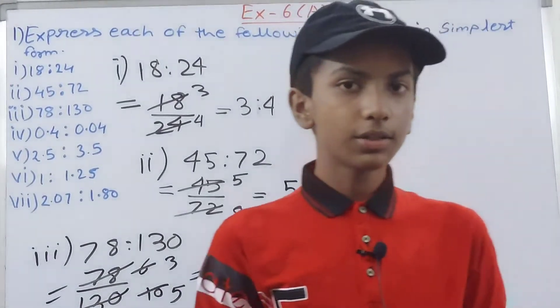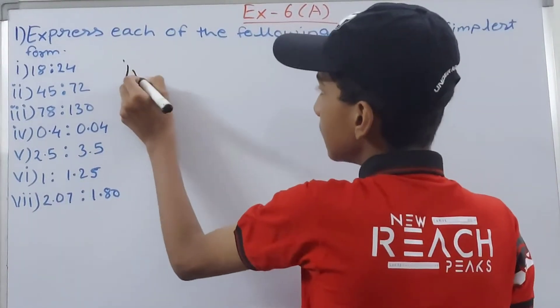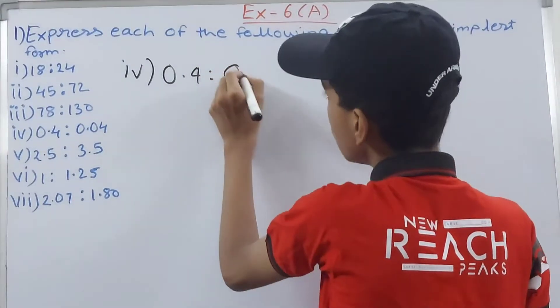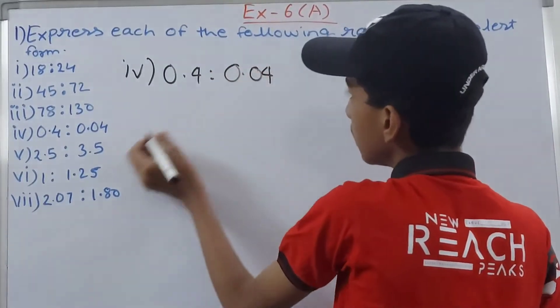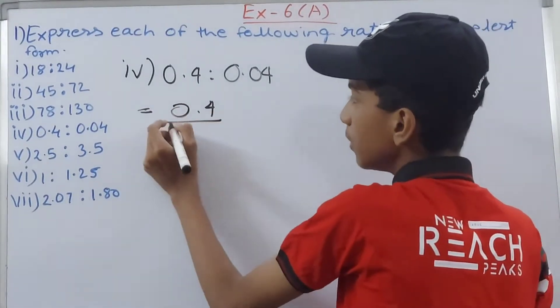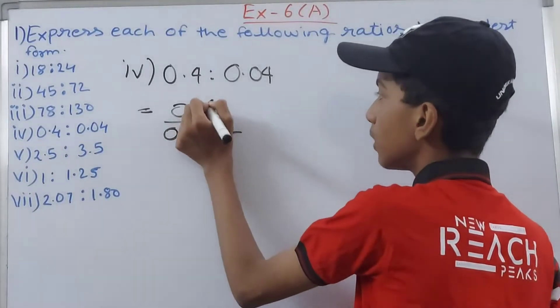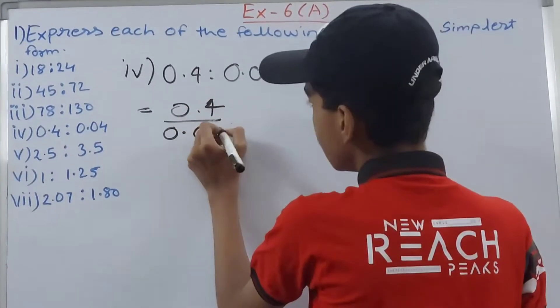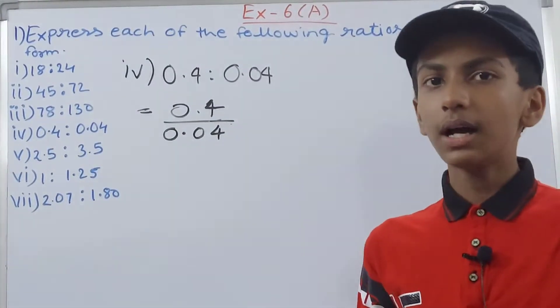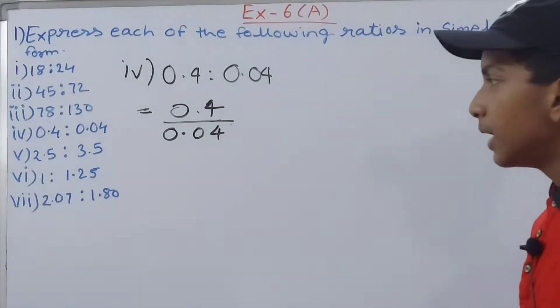Let's move on to the next part. The fourth part is 0.4 is to 0.04. So again we will convert this, so we'll have 0.4 upon 0.04. Now you can see that we have decimal points here in this question.